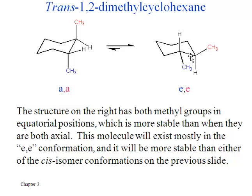So this structure on the right is much more stable. That's why the arrow is pointing more heavily towards the right than the left. We would expect this one on the right to be more prevalent, and we can conclude that the trans 1,2 dimethylcyclohexane is more stable than cis because the cis does not have the opportunity to make both of its groups equatorial the way trans does.